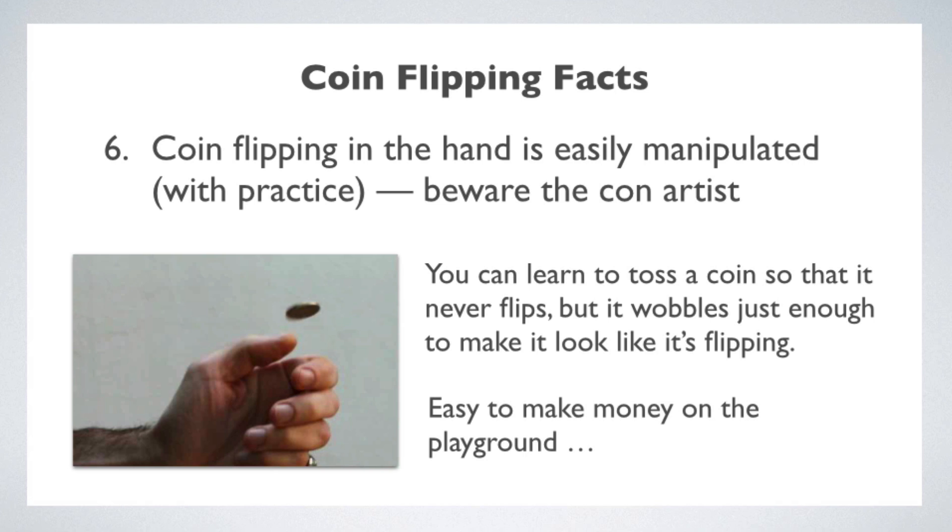Now I'm going to add one more coin flipping fact, which is an important one to remember. Coin flipping in the hand, where you flip and catch the coin to reveal it, is easily manipulated. With some practice, you can learn to toss a coin in the air like a pizza, so that it spins, but it never flips over. So if it went up heads, it'll come down heads. Now the trick to this is to add enough wobble to the rotation, so that it visually gives the illusion of flipping. This is something that almost any coin magician can do. It just takes practice.